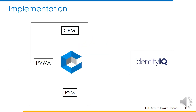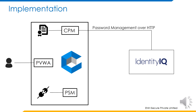Now let us take a look at the overview of this implementation. On CyberArk, we have the central policy manager and the privileged session manager, which are connected to the platform definition and the connection component definition. We also have the password vault web access component, onto which the user will log on and perform the necessary actions. The CPM talks to IdentityIQ over HTTP for the password manager tasks of verification or change, and the user initiates sessions using the privileged session manager — these sessions are done over RDP.